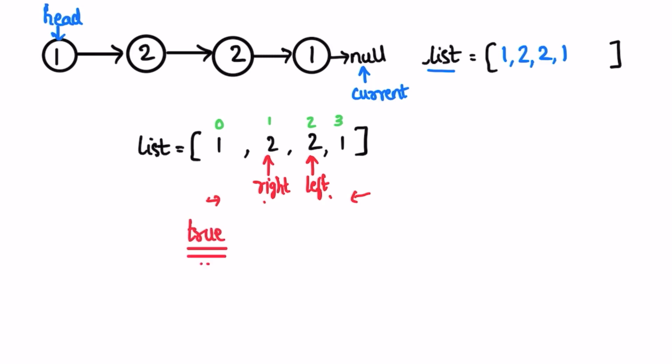Let's take another example: if the list contains mismatched elements, left will point at one end and right at the other. Since the value of left and right is not equal, we return false — it is not a palindrome.